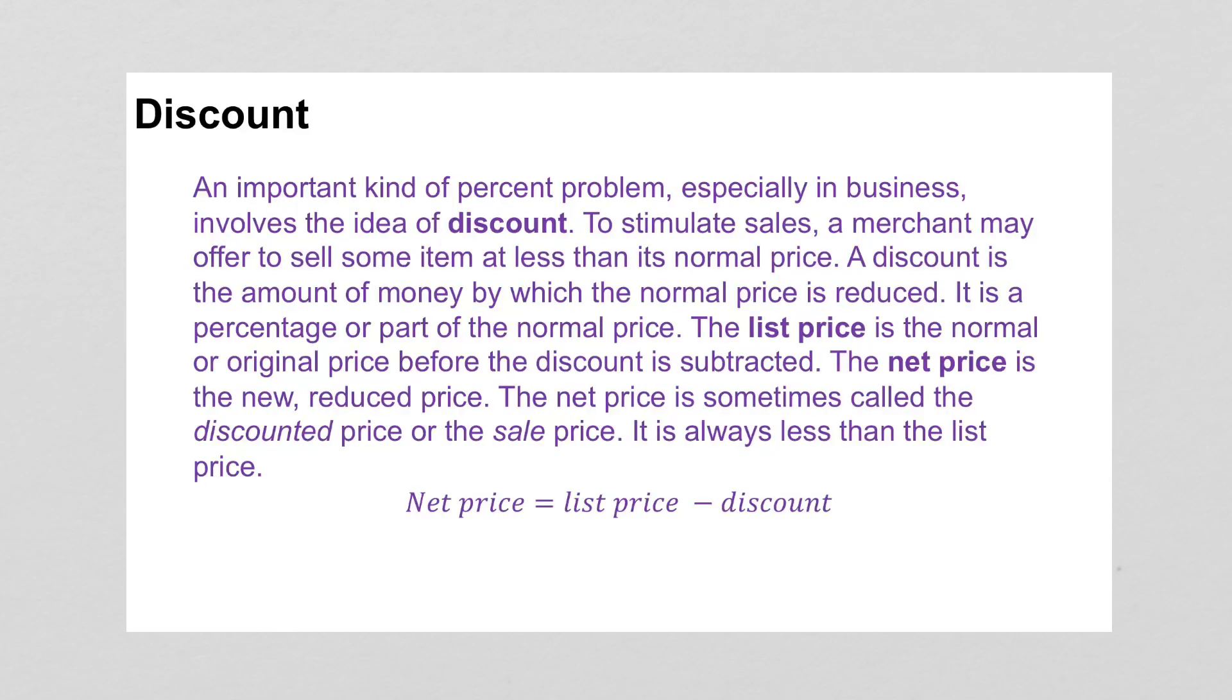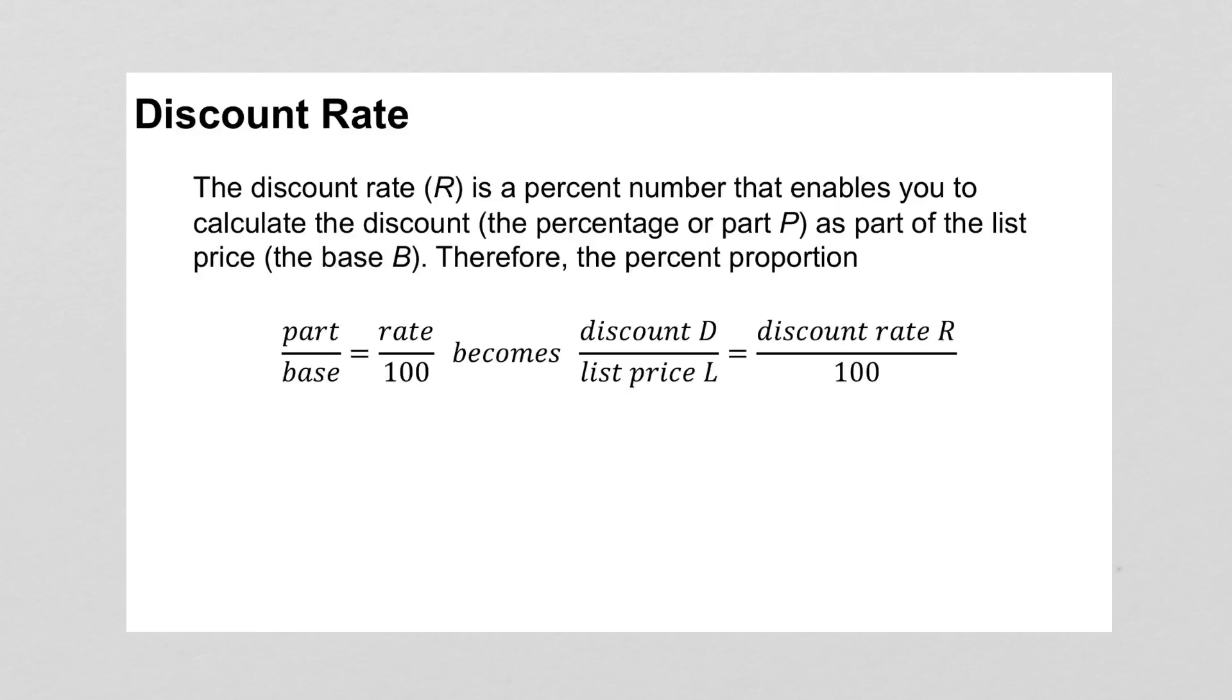So a discount reduces the price of an item. The list price is the normal original price, and the net price is the new reduced price. The net price would be the list price minus the discount. To find the discount rate, you would take part over base equals rate over 100. The part is the discount, the base is your list price, and then you have your discount rate over 100.